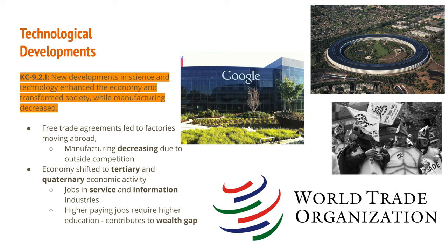Companies like Google, Apple, and Silicon Valley firms led the way in new economic sectors. Blue-collar manufacturing jobs declined due to outside competition and free trade agreements that allowed companies to move manufacturing operations abroad where labor costs are much lower. The economy shifted to tertiary — service-level jobs — and quaternary economic activity, which includes information industries and higher-paying white-collar jobs. These higher-paying positions require advanced education, contributing to the growing wealth gap, as not everyone can afford or take on debt for four years of college.